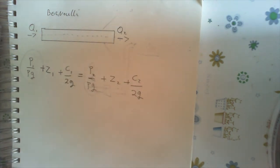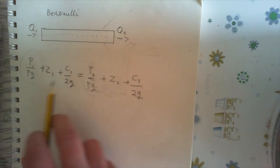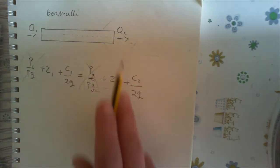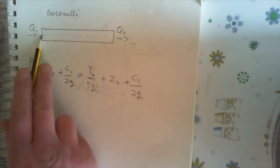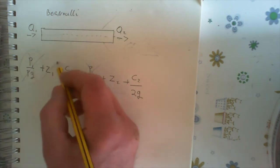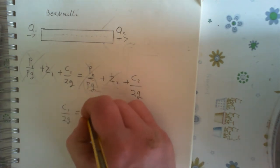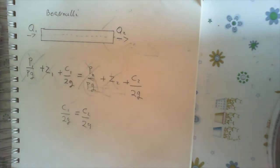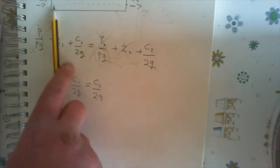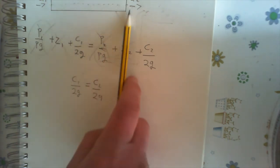Now if this was on a horizontal plane — if the pipe is lying flat — and say both ends are at the same level at atmospheric pressure, they're going to equal each other, so you can cancel that out. The height of the tube is the same on both sides, so the heads are equal and you can cancel those too. What you're left with is C1²/2G equals C2²/2G.